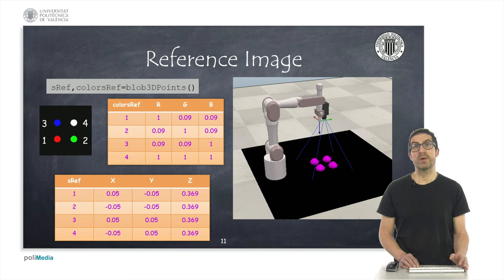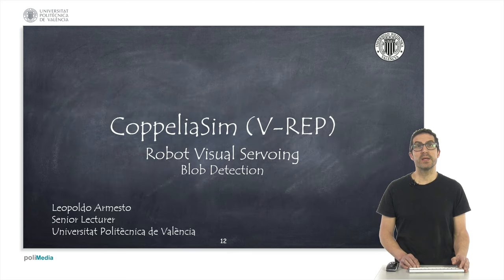If everything is correct, you should also see that the camera projects force views right in the position where the circles are. Well, in this presentation I have explained how to implement object detection that will help us to implement visual feedback control, as I will explain in the next video. Thank you very much.